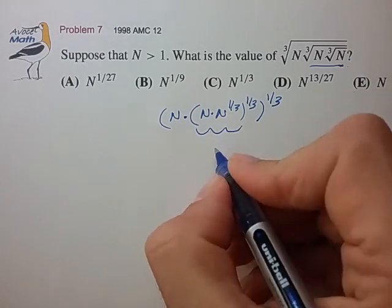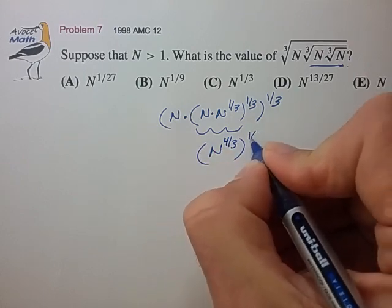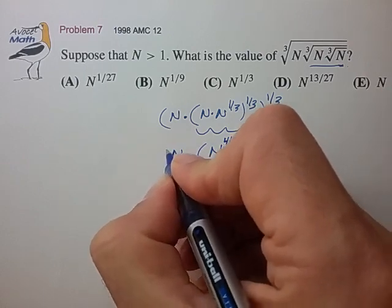This inner portion here, we can write as n to the 4/3, all to the 1/3, times n, bracket, all to the 1/3.